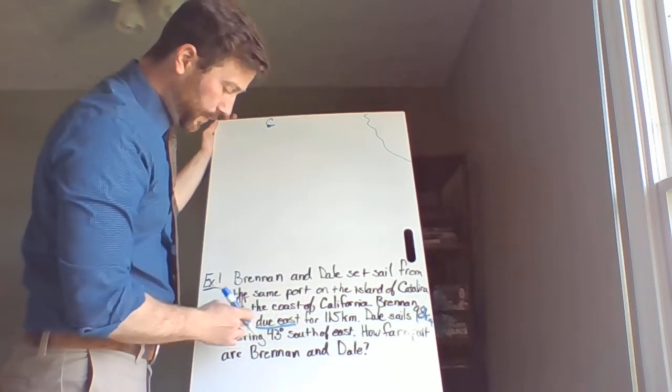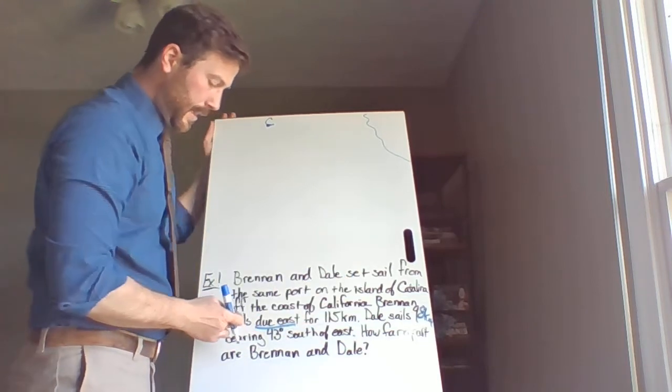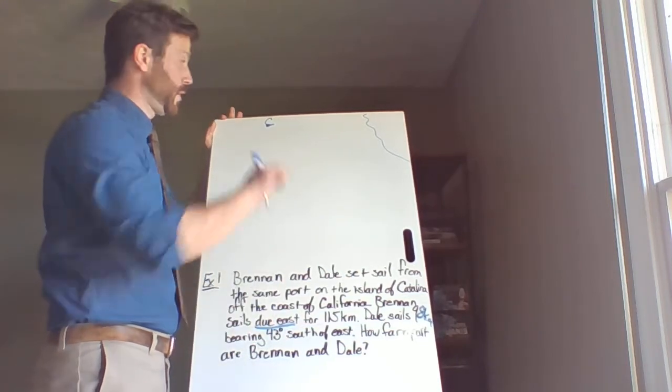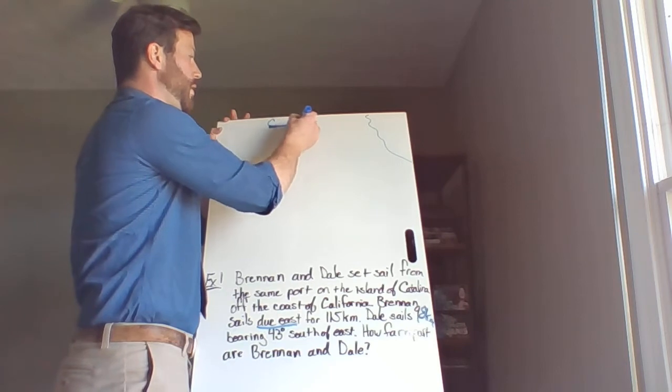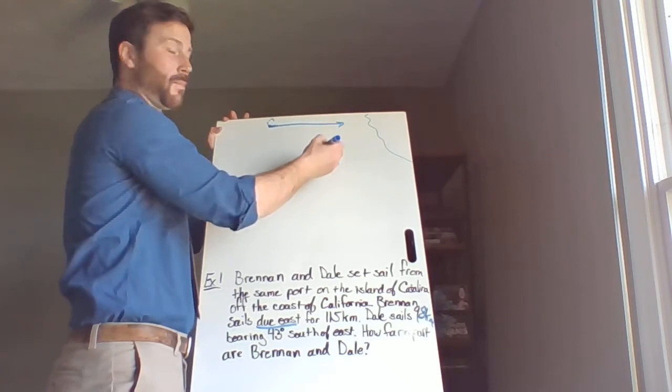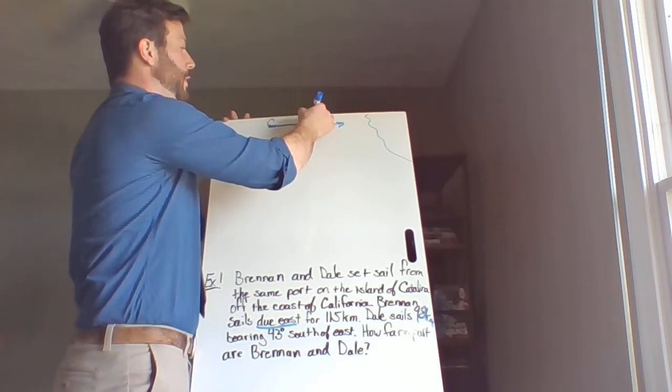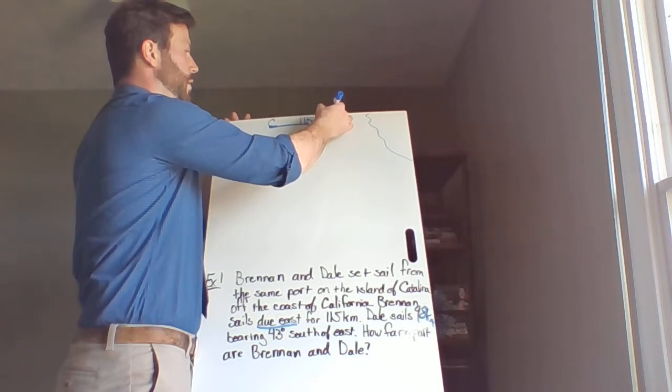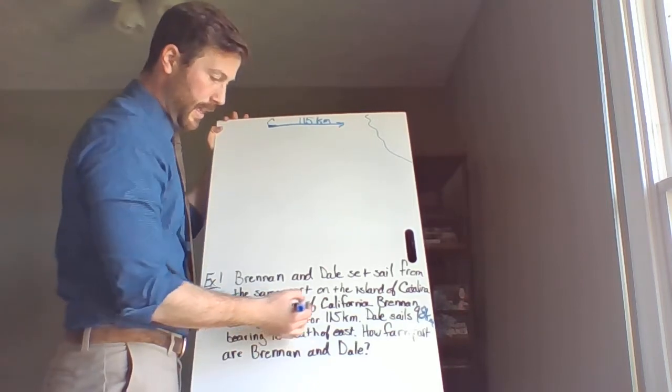We'll call that C. Now we have, let's see, Brennan sets sail due east. So that's a straight shot east. It was this way. And he goes 115 kilometers. And that is Brennan.